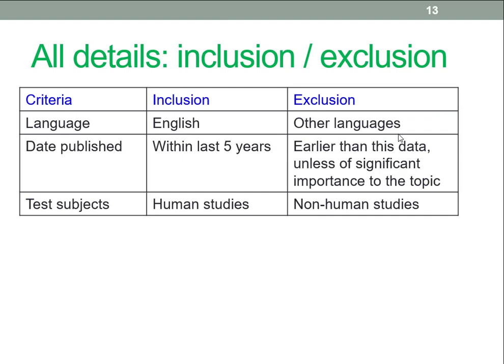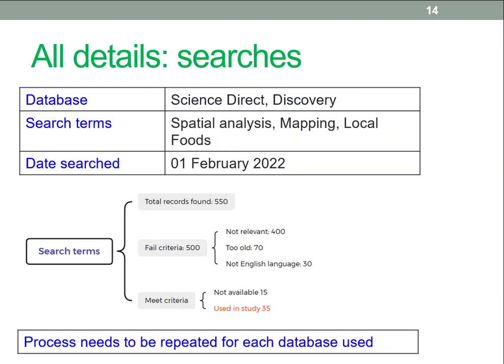Back to inclusion and exclusion criteria — this time with a separate table, which is probably the best approach. Some of the criteria will depend on your particular type of study. This is a possible example of documenting your search project. We've got documentation of what databases were used, what search terms were used and when searched, then the visual representation of the search. Use this for each database, and you can possibly combine the information together.